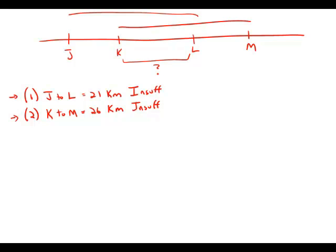Well now that the two statements have been judged to be insufficient, now we have to consider the combination of statement number one and statement number two. Well now we know that the distance from J to L is 21. The distance from K to M is 26. And we want to know about their overlap, the distance from K to L.